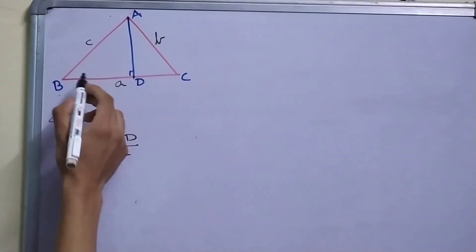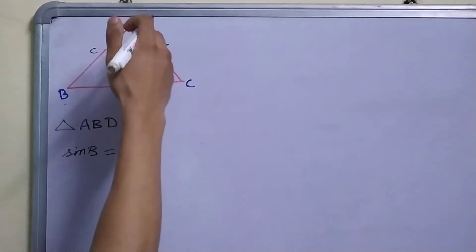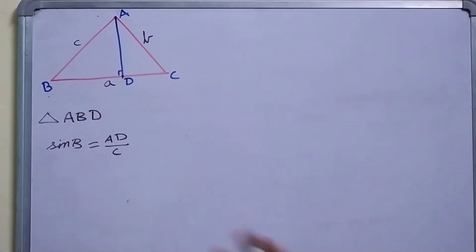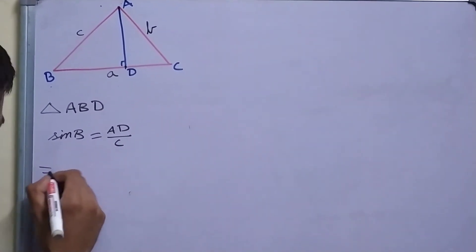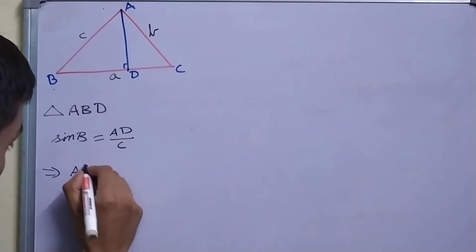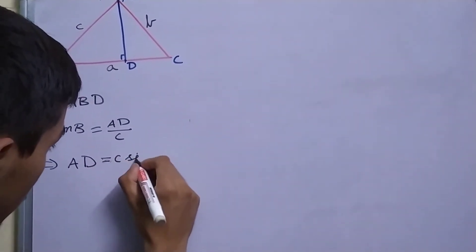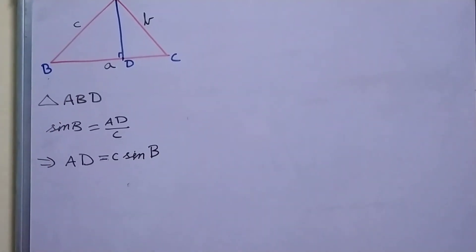Why are we taking sine? Because if we need a relation between AD and c, sine is the trigonometric function which relates AD and c. From this we get that AD is equal to c sine B.